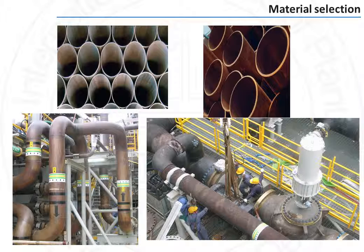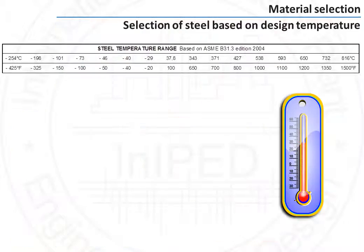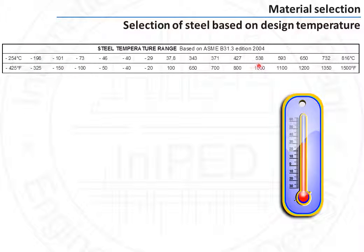The second parameter that comes into play when selecting material of construction is the fluid temperature. Both high and low temperatures to which the material could be subject have to be taken into account. For instance, carbon steel is suitable for a temperature range between minus 29 degrees Celsius to 427 degrees Celsius only. Below that, low temperature carbon steel and then alloys up to stainless steel need to be used. Above that, stainless steels also have to be used.